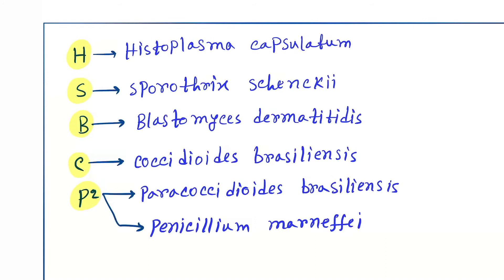Molds are seen in environment and yeast are seen in human tissue. You can remember by a mnemonic called HSBCP squared: H for Histoplasma capsulatum, S for Sporothrix schenckii, B for Blastomyces dermatitidis, C for Coccidioides brasiliensis, P for Paracoccidioides brasiliensis, and P for Penicillium marneffei.